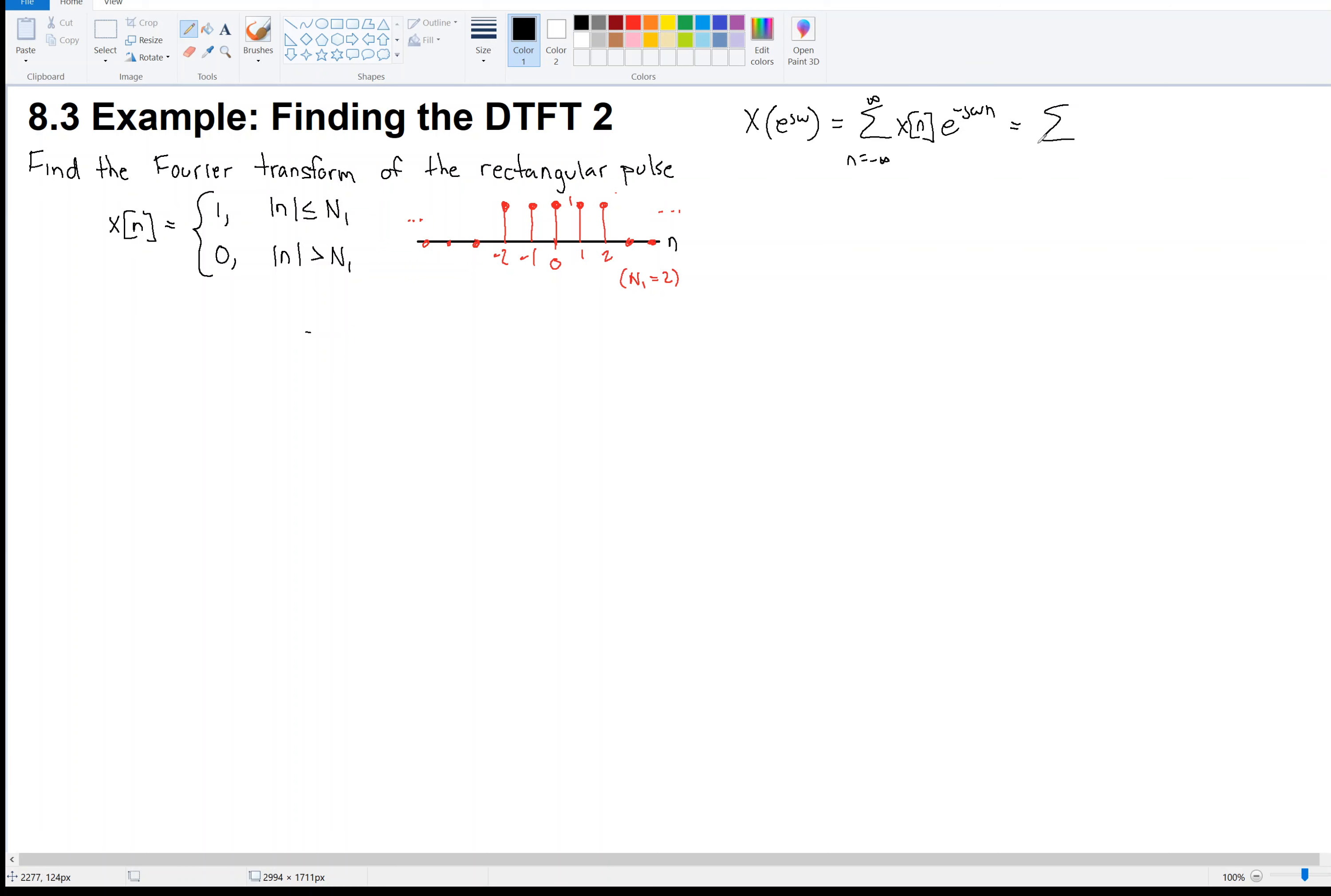So I might as well sum from n equals minus n1, right? We're going to, it's minus 2 in this case, but we're going to keep n1 throughout the calculation. So we're going to sum from minus n1 to positive n1. And in that range, the signal is 1. So I'm not even going to write that there. And then we have e to the minus j omega n. So this is the summation that we have to solve.